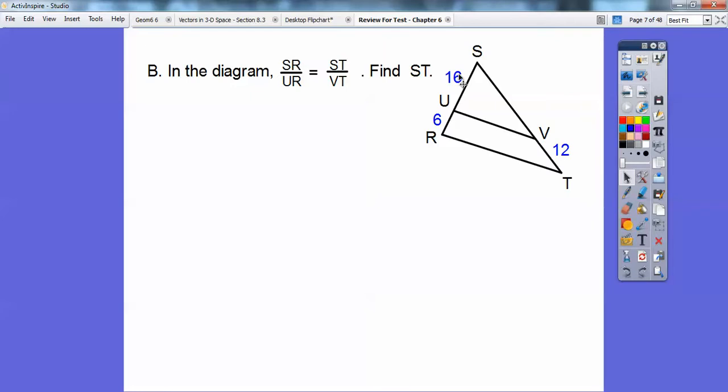Okay, so SR is 16 plus 6 over UR, which is 6. I'm going to call this little piece X right here, and then so this is going to be X plus 12. That's what goes right here, X plus 12. So I just follow in here, SR over UR is 22 over 6, ST is X plus 12, and then VT is this 12 right over here. Go ahead and cross-multiply.